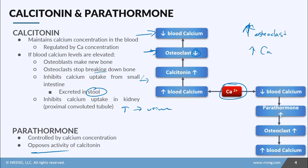Parathormone does the exact opposite — it opposes the activity of calcitonin. If there's decreased blood calcium, we need to increase osteoclast production. Parathormone production goes up, stimulating those osteoclasts. That increased osteoclast production causes breaking down of bone, which returns calcium to the blood, resulting in an increase in blood calcium.